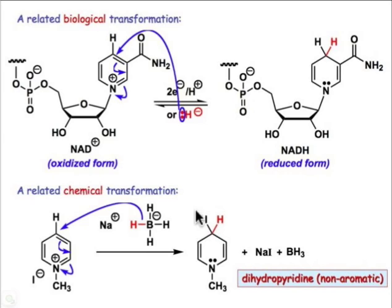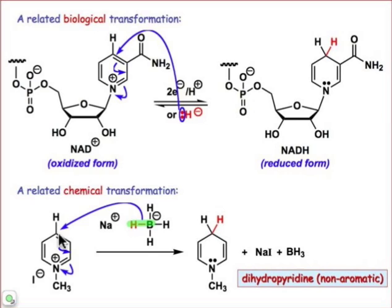We can see that in the lab as well. Here's a chemically related analog where the hydride source is a boron hydride. You can think about this as a resonance contributor where there's H⁻ and neutral boron, and that H⁻ is a nucleophile that adds in to the 4 position. That generates what we call dihydropyridine — a non-aromatic ring system that looks very much like the NADH molecule.